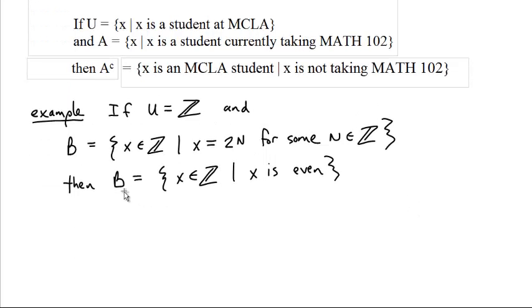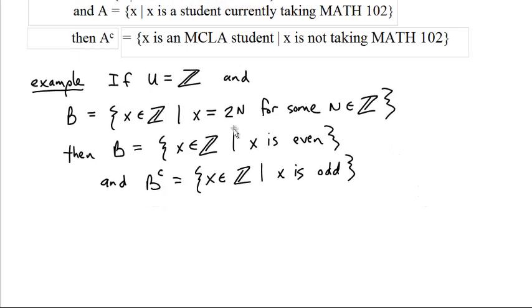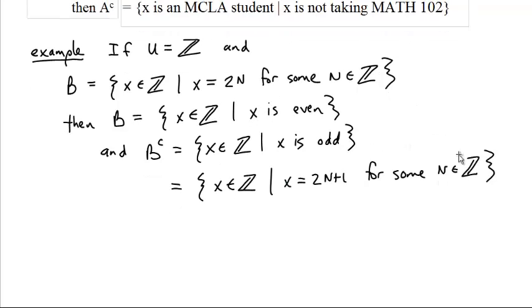But if B is the set of all the even integers, then the complement of B is all of the odd integers. If you can't be written as 2 times something, you can be written as 2 times something plus 1. This is a good time to give these definitions.